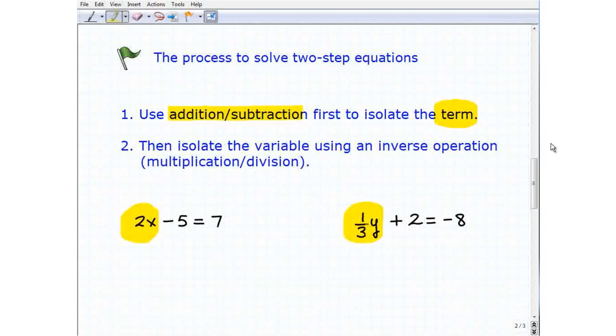So once we use addition or subtraction to isolate that, kind of like if we were just solving for this part of the equation, the next thing I'm going to do is actually solve the remaining basic equation. That's actually going to be a one-step equation, and we're going to use the multiplication and division inverse operation.